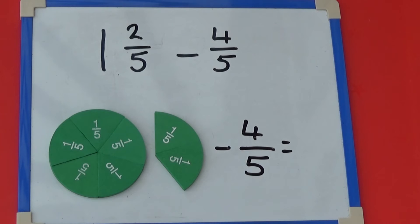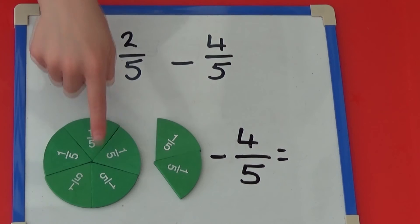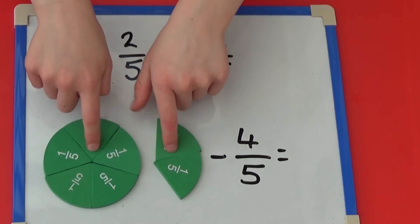We need to use more than one fraction circle as our first number is more than one. We need to start with one whole fraction and two fifths or seven fifths altogether.